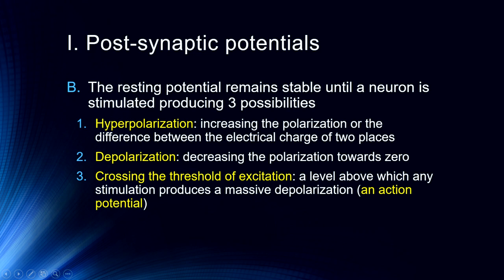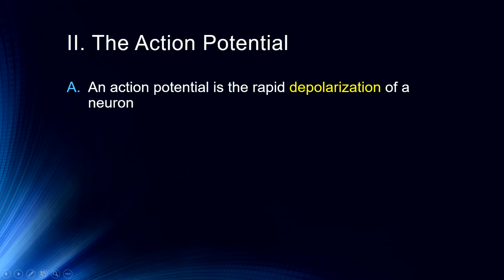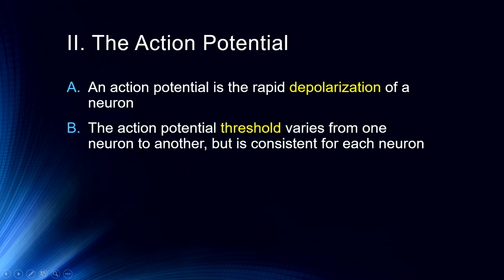In a later lecture we'll talk about how action potentials, their firing rates, volley firing, and groups of neurons firing at once are measured. In single-cell recordings we might measure the firing rate of a neuron — whether stimulation increases or decreases it. We can also measure the occurrence of action potentials in large numbers by placing electrodes on the scalp of participants to measure electrical activity in the brain. The threshold at which an action potential will be generated varies from one neuron to another but is consistent for each individual neuron.